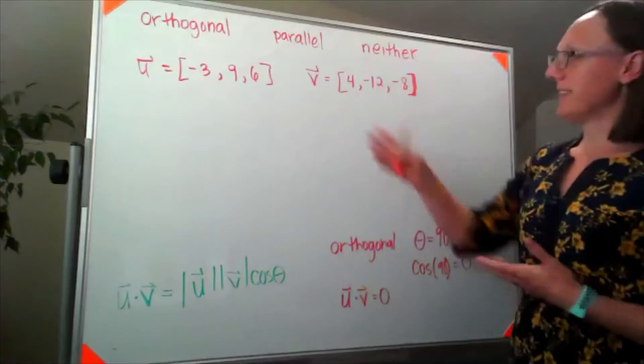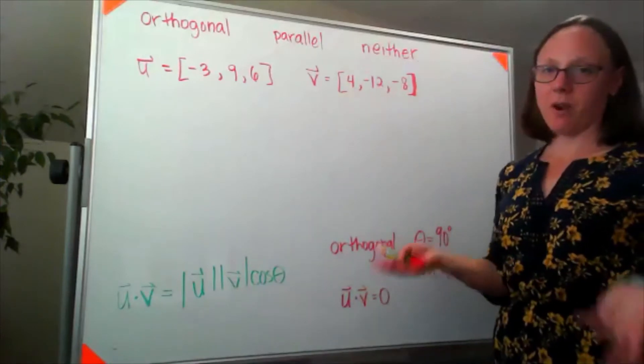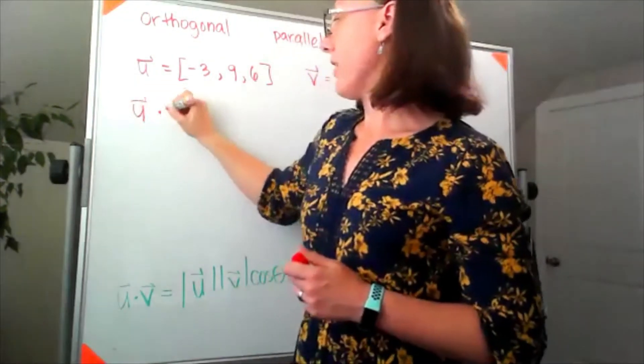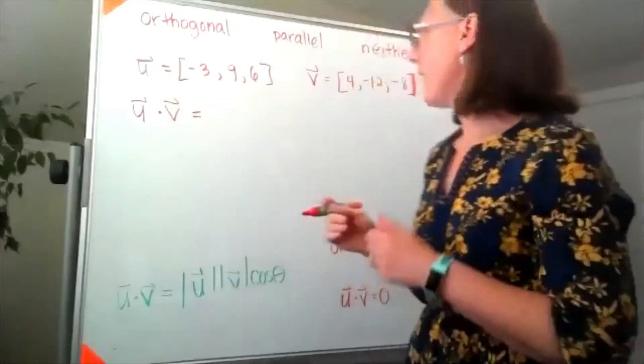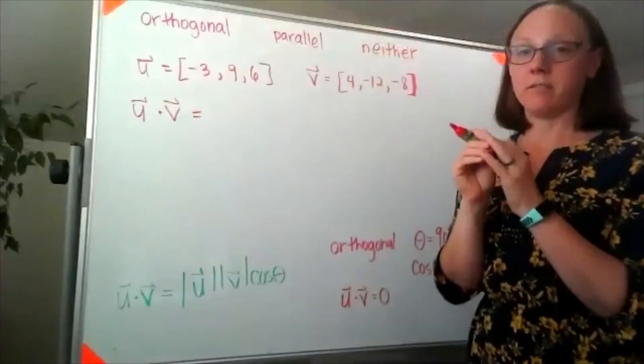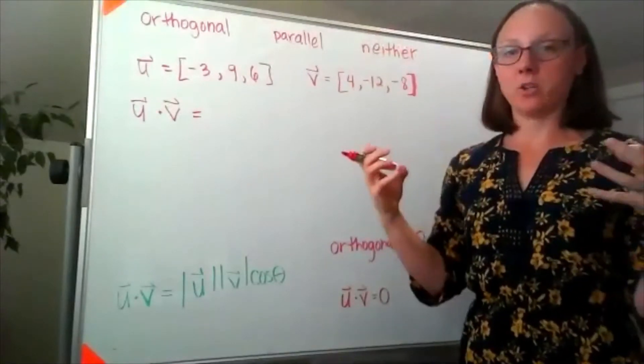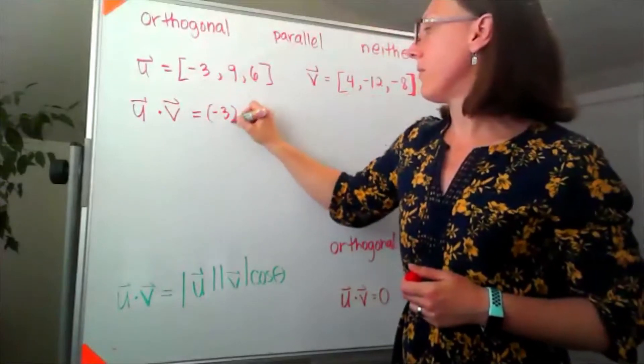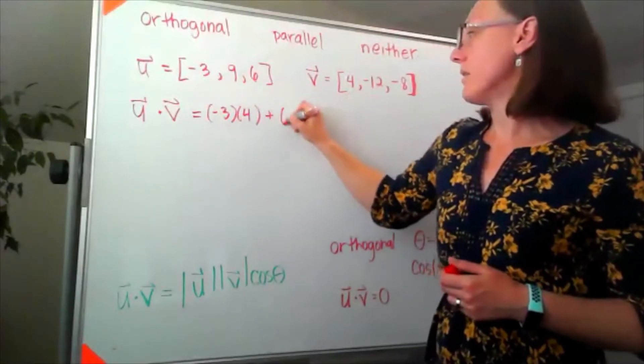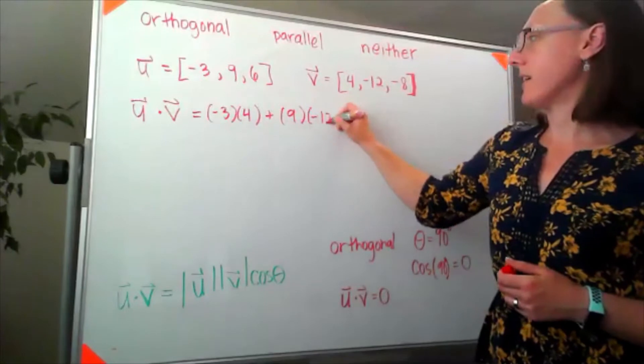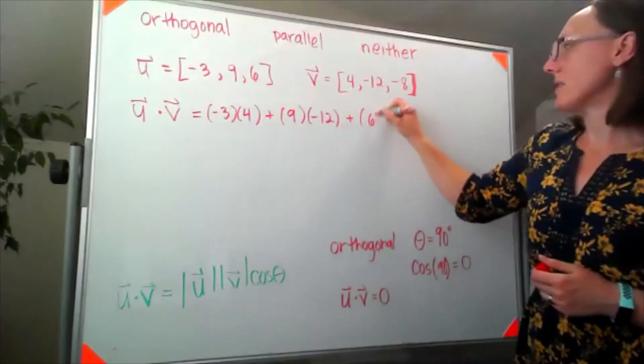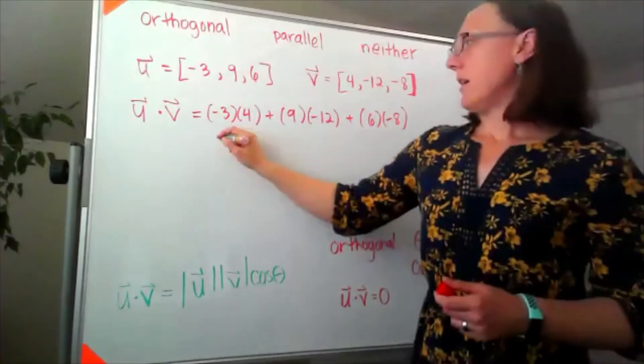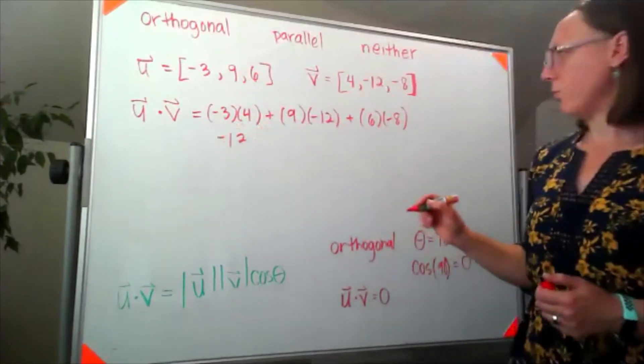So let's just get started here and take the dot product and see what happens. If I take u dotted with v again I'm multiplying component wise and then adding between them. So I'll have negative 3 times 4 plus 9 times negative 12 plus 6 times negative 8. That's a negative 12.